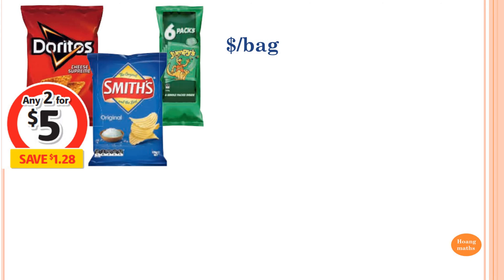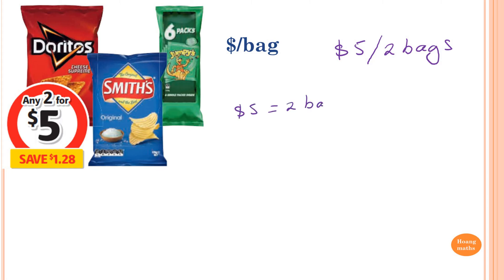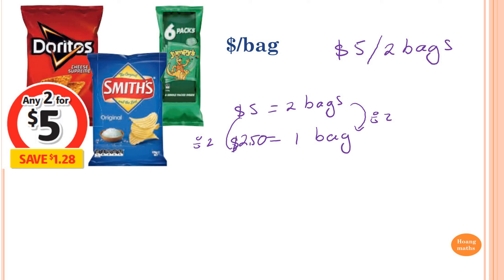Let's do a few examples. This one says any two for five dollars, and we want to write it in dollars per bag. We know that is five dollars for every two bags. We want per bag, meaning one bag. From two bags to one bag, you divide by two, so you must also divide five dollars by two, which gives two point five. Because it's money, we say two dollars fifty. So that means it is two dollars fifty per bag.